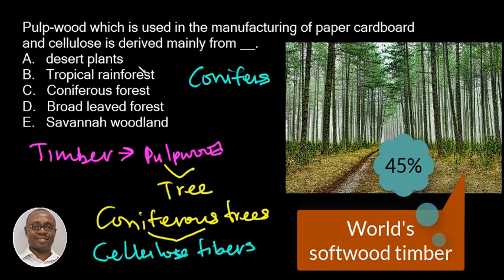Now let's go back to the question and answer options. Option A: Desert plants — not a valid term, incorrect. Option B: Tropical rainforests — pulp wood is not derived from tropical rainforests, incorrect. Option C: Coniferous forests — exactly! The pulp wood is mainly derived from the coniferous forests.